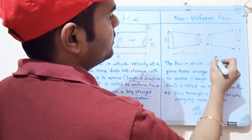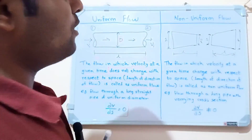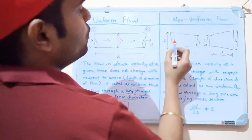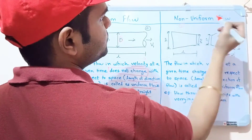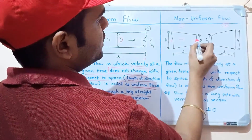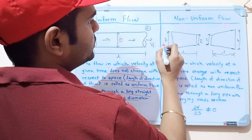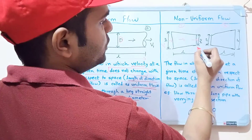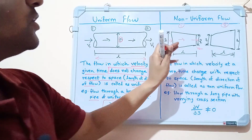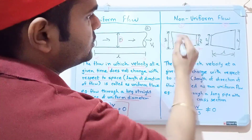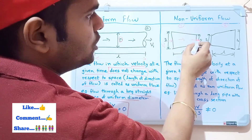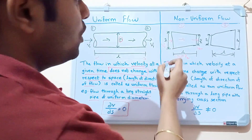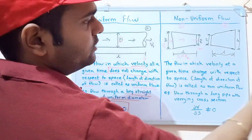The length of both pipes is L. Since the diameter of the pipe has changed, when fluid flows through the first pipe — a converging pipe — the velocity at diameter d1 is v1, and at diameter d2 the velocity is v2. The velocity changes along the length.